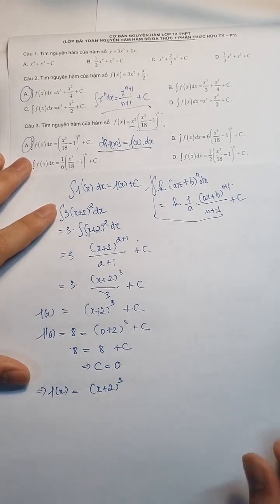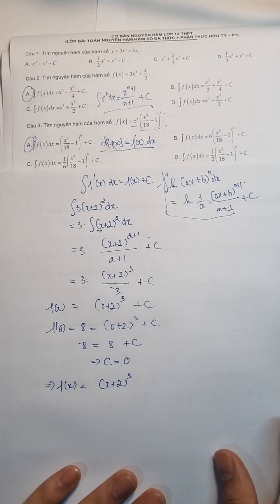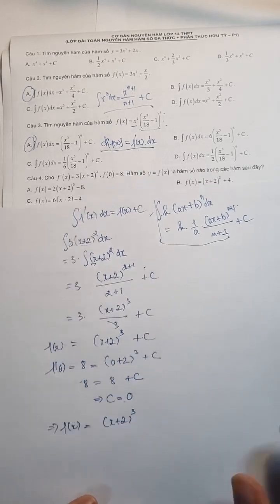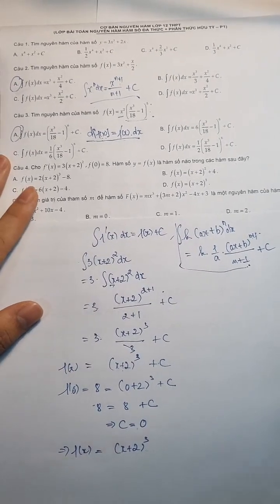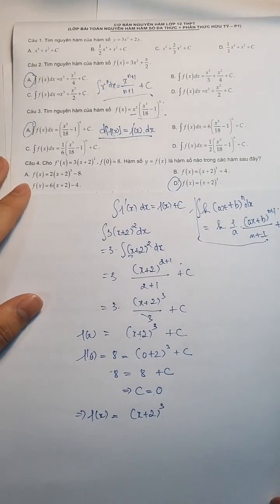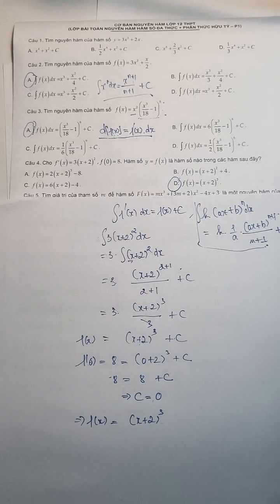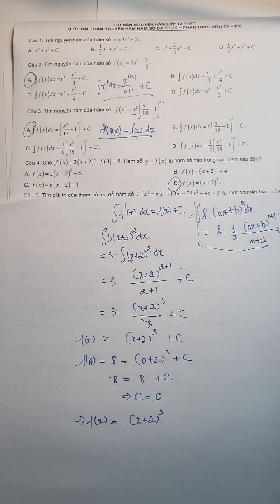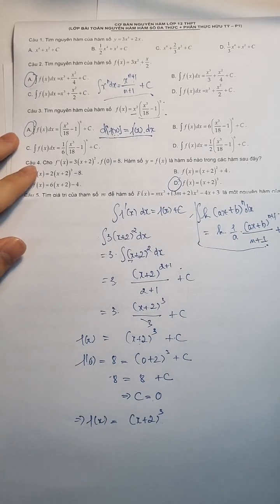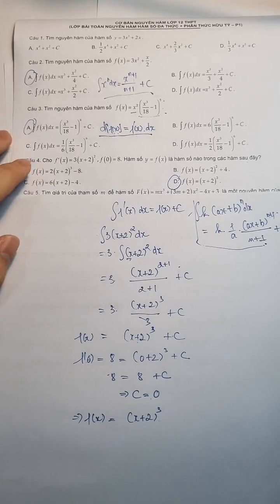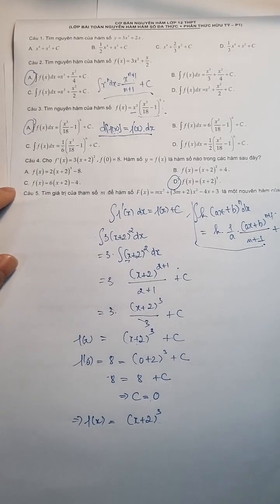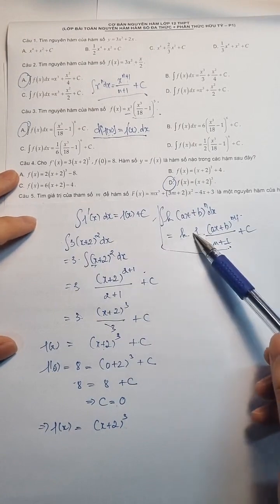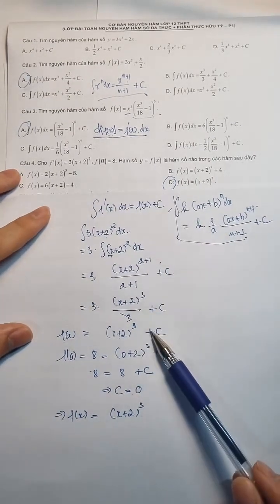Thì sẽ bằng (X+2)³. Vậy F(x) người ta được là (X+2)³. Đáp án chính xác đây là đáp án D. Nói chung là mình chỉ cần áp dụng đúng cái công thức này thôi. Áp dụng đúng cái công thức này thì nó rất là đơn giản nhé. Xong rồi người ta sẽ cho một cái dữ kiện này thì mình tìm ra C là xong.